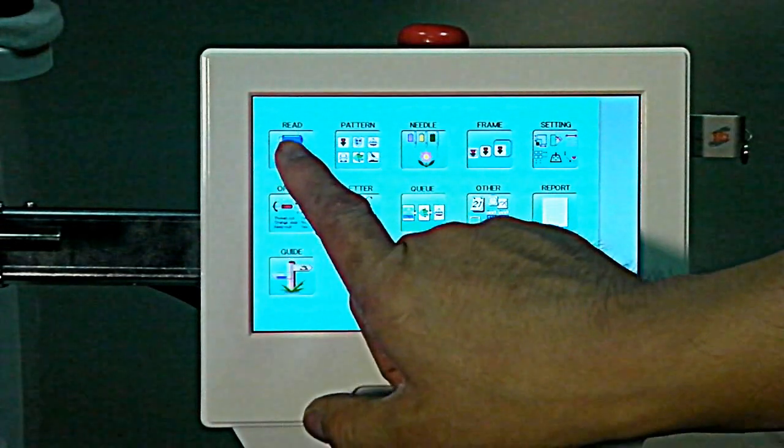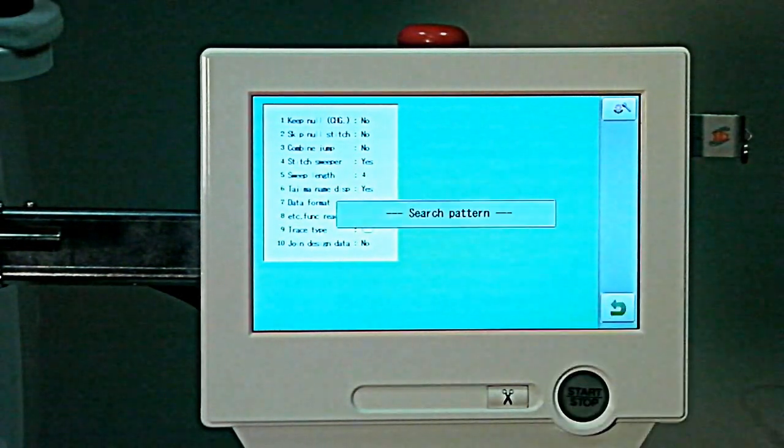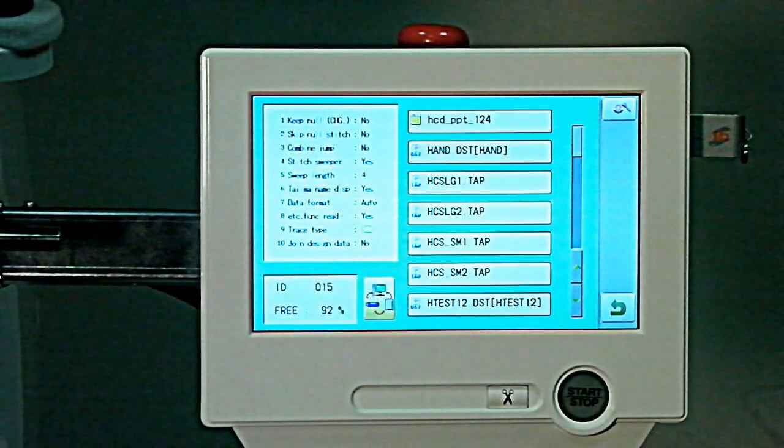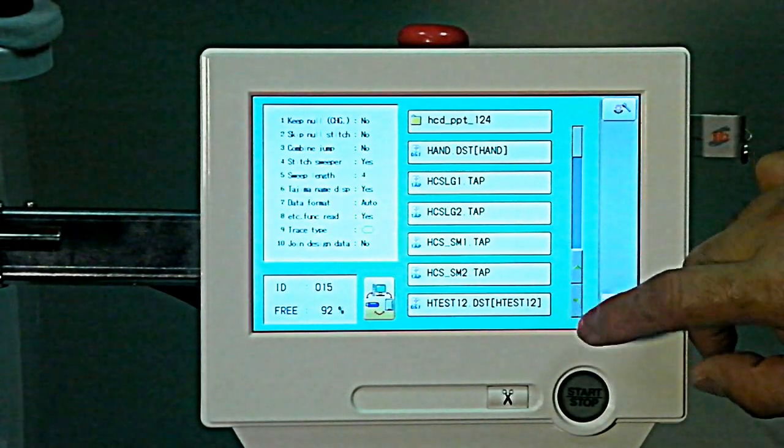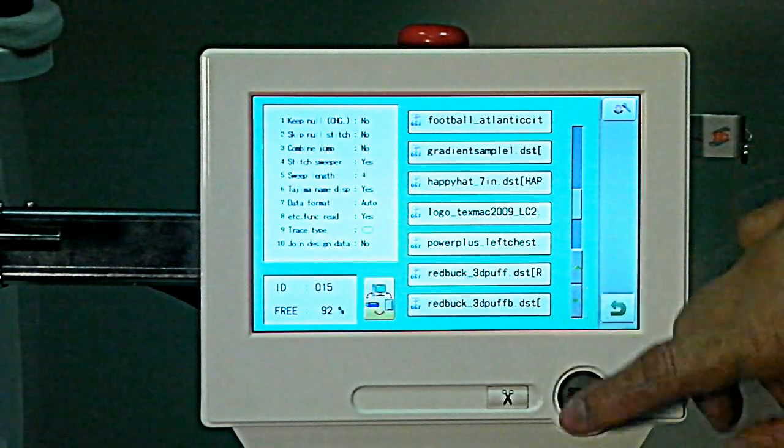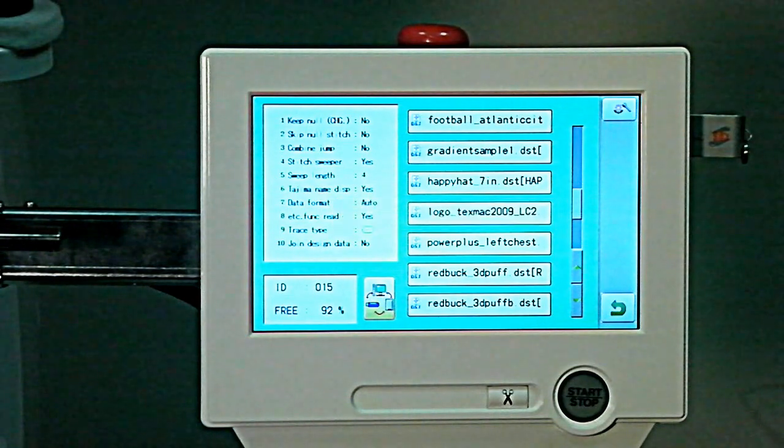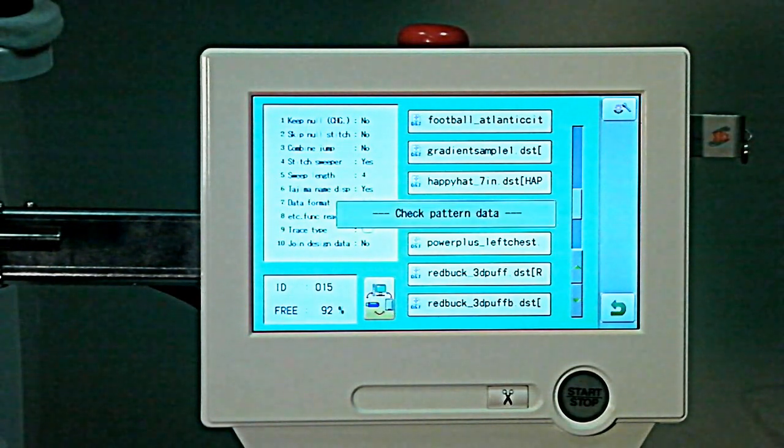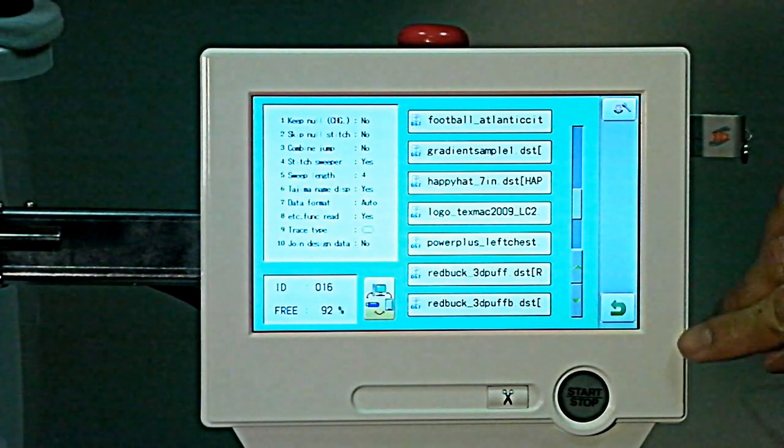And we want to just read in that design and we can read either from a computer or from the thumb drive. In this case we'll just choose our little USB thumb drive. And we get a list of the designs that pop up and it's as simple as selecting from the list of things that show up. So in this case I want to go ahead and select something here like, this is a nice logo from TexMac. And by selecting that it beeps, it's showing a data check, and that second beep means that we're done.